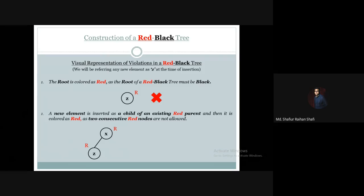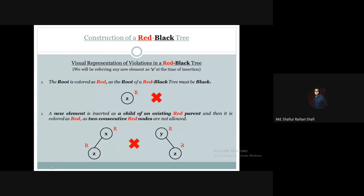We always color the new element red. But when a red parent already exists and we insert a new red child, this is not acceptable according to the properties of a red-black tree. This type of situation creates a violation.